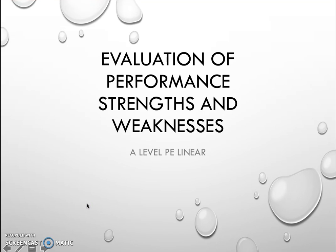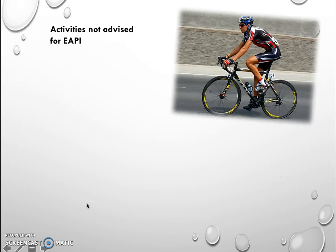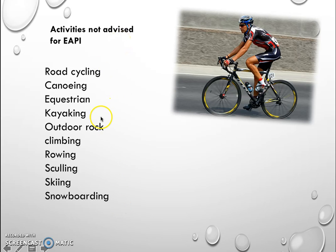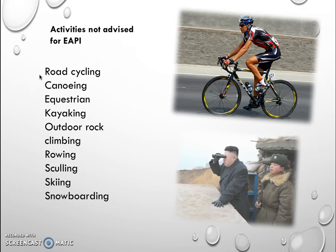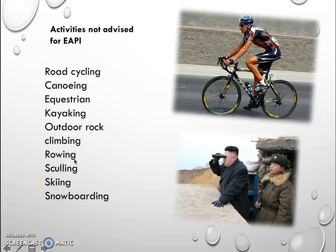First, let's talk about the activities that are not advised. Notice it says 'advised' — it's not saying you definitely can't do it. Here is the list of activities they recommend not doing. Part of the reason is you have to be quite far away from them; if somebody's doing road cycling they're just going to disappear into the distance, making it very hard to analyze their performance.